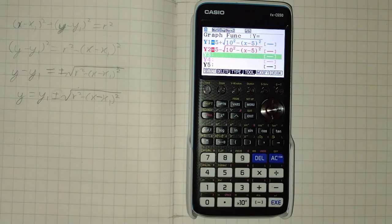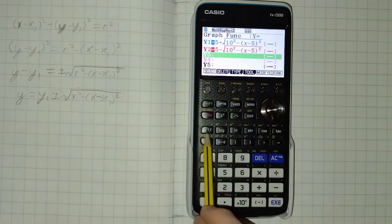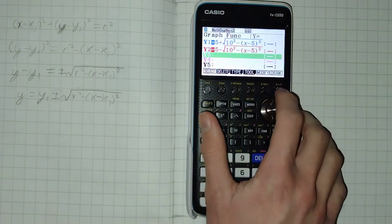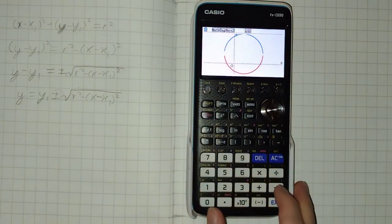And for anyone unfamiliar with the graph mode, x is on this button here. You can then click f6 for draw. And there's our circle.